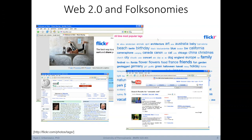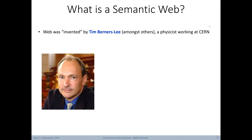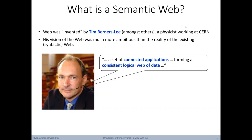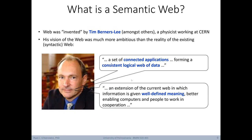So what is a semantic web? The original web was invented by Tim Berners-Lee, among others, a physicist working at CERN. His vision was much more ambitious than the reality of the existing web, which we can think of as more of a syntactic web — a defined structure, but not a defined and universal underlying meaning. Berners-Lee envisioned a web that was a set of connected applications forming a consistent logical web of data, an extension of the current web in which information is given well-defined meaning, better enabling computers and people to work in cooperation. This vision became known as the semantic web.